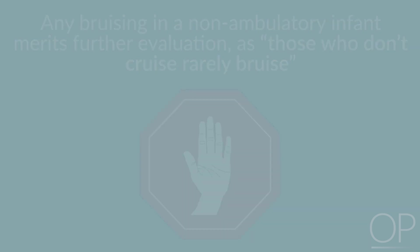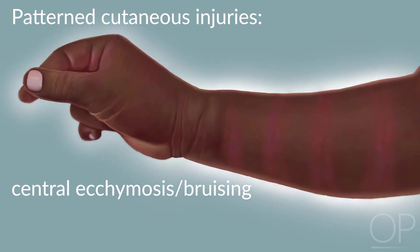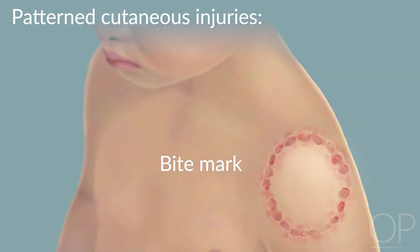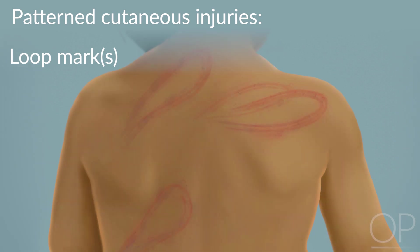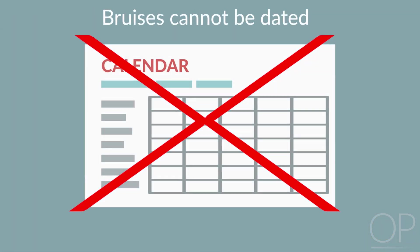Other concerning features include bruising in a defined pattern to suggest a mechanism of injury, such as a hand-shaped bruise, an elliptical pattern of abrasion with central ecchymosis as a result of a bite, or a loop-configured bruise resulting from a flexible object folded onto itself, such as a cord, rope, or belt. Of note, you cannot date a bruise. There is no scientific basis for a timeline of color change, nor is there a standard method to account for the various factors contributing to the bruise's color, such as skin pigmentation or tissue injury depth.